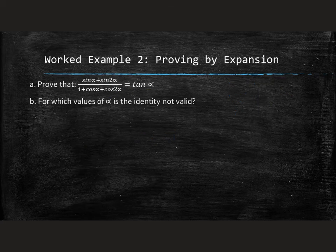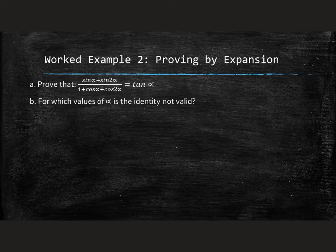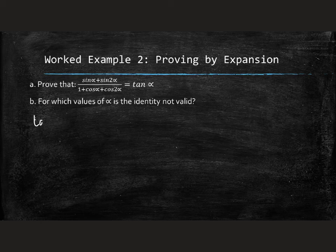The second part to this question said, for which values of α is this identity not valid? So make some notes yourself as to what have we noticed, left hand side, right hand side, that would cause this thing to be not valid? Well, let's start with the obvious one, the tan. What do we know about tan α? When is it not valid?